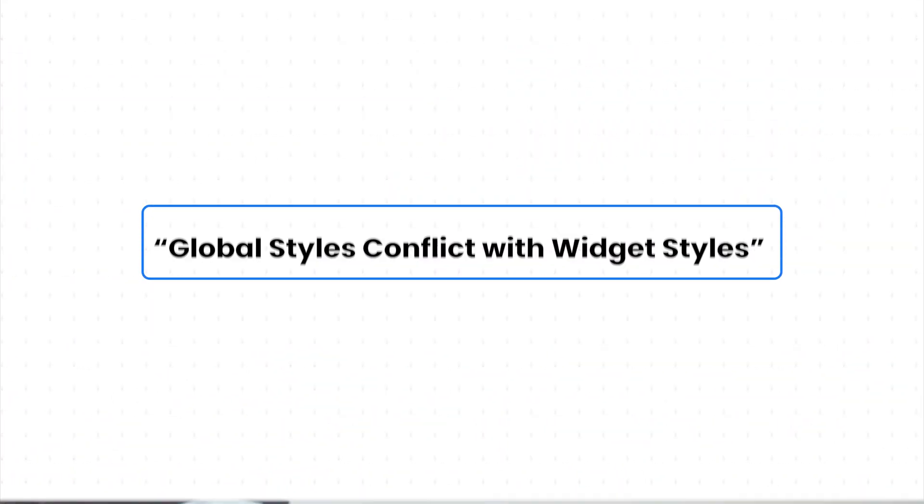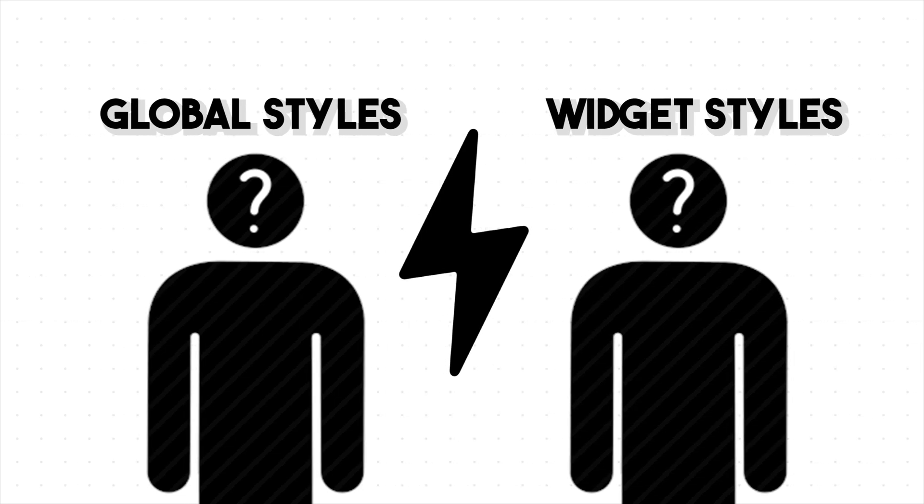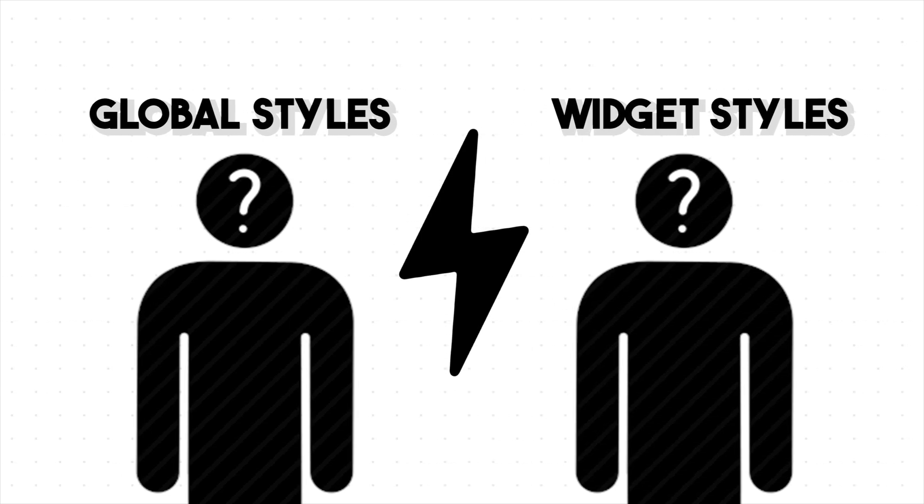The number one reason that might be causing this issue is global style conflict with widget style. Sometimes Elementor's global settings like typography can conflict with the specific font style that you have set in your heading widget. That is why you might be seeing the old font in the heading widget instead of the new ones that you have set.